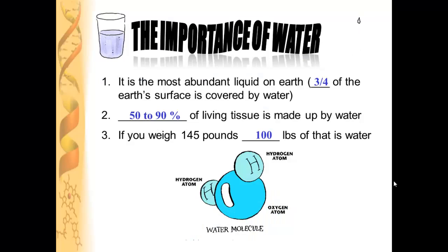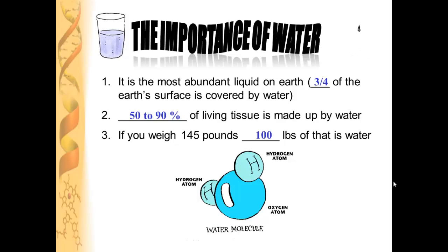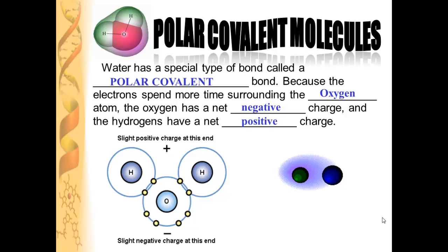Water makes up 75% of the Earth's surface, and it makes up a lot of you as well. 50 to 90% of your living tissue is made up of water. So if you weighed 145 pounds, 100 pounds of that is water — that is a lot of water molecules inside your body.